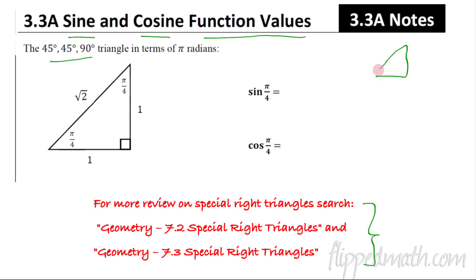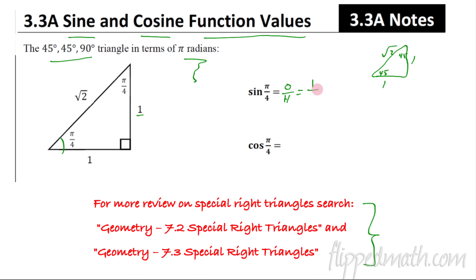In geometry we only use degrees, so we draw a 45-45 triangle and label the sides. The special right triangle has side lengths of 1, 1, and √2 on the hypotenuse. We're not dealing in degrees anymore — we think in radians. The angle π/4 is 45 degrees, with legs of length 1 and hypotenuse √2. The sine of π/4 is opposite over hypotenuse: 1/√2. We rationalize by multiplying by √2/√2, giving √2/2.